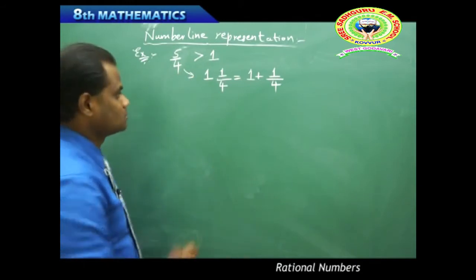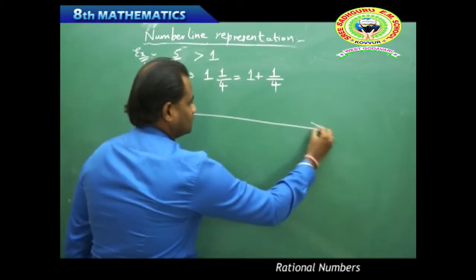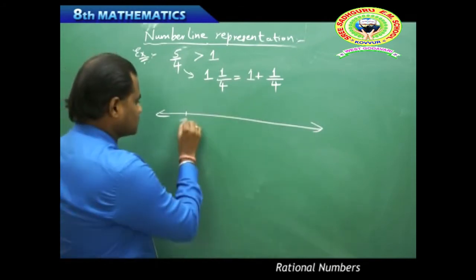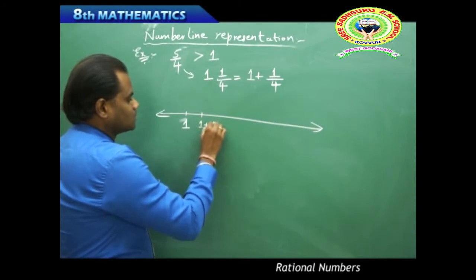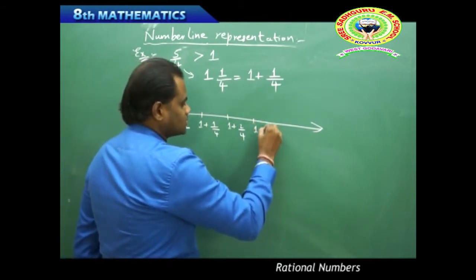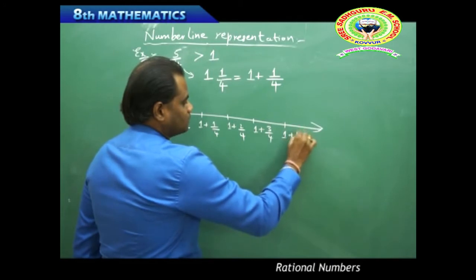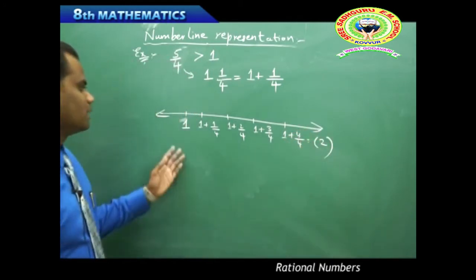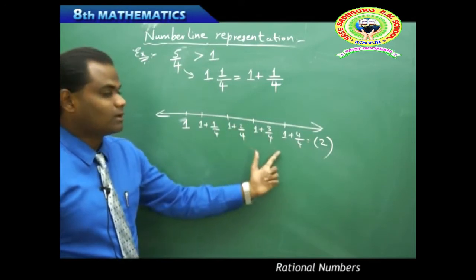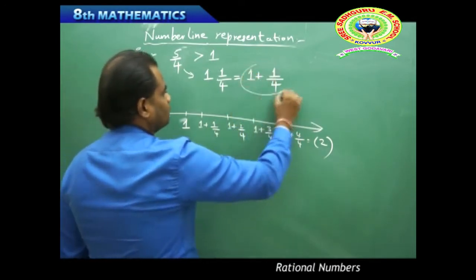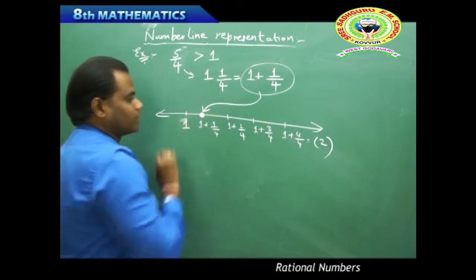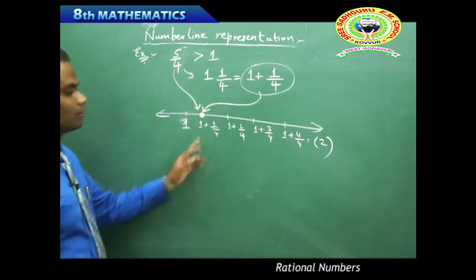To represent 5/4 on the number line, I note it lies between 1 and 2. I divide the interval between 1 and 2 into quarters: 1 plus 1/4, 1 plus 2/4, 1 plus 3/4, and 1 plus 4/4 which equals 2. The value 1 plus 1/4, or 5/4, is identified at the first division point between 1 and 2. This is how 5/4 is represented on the number line.